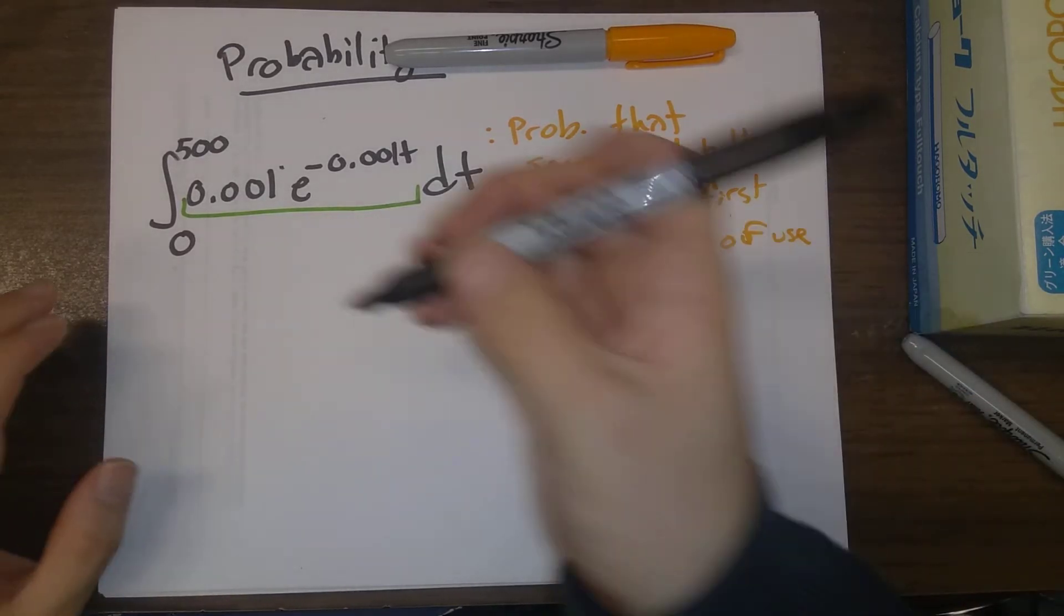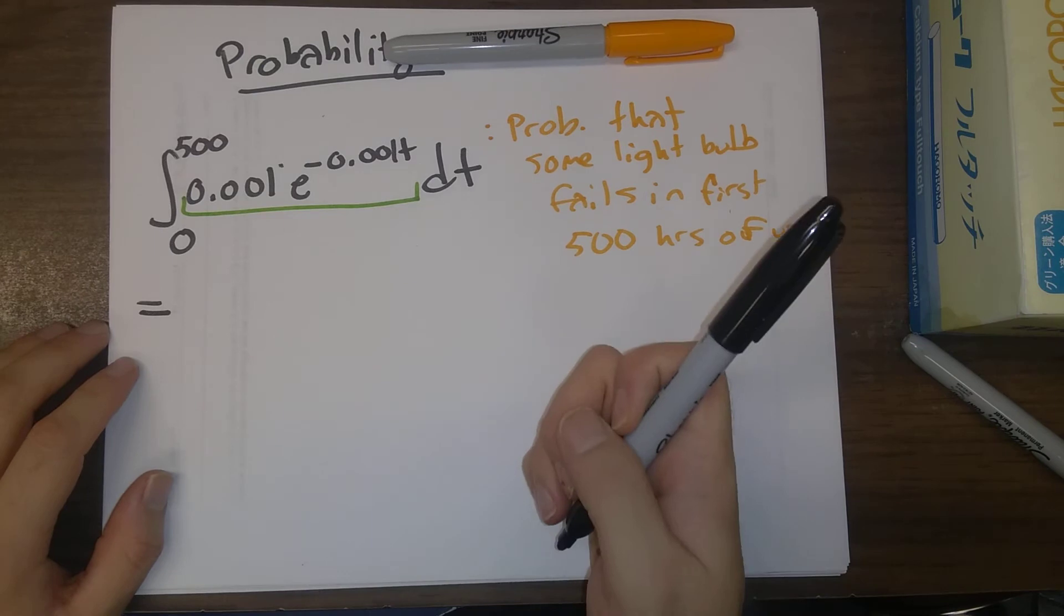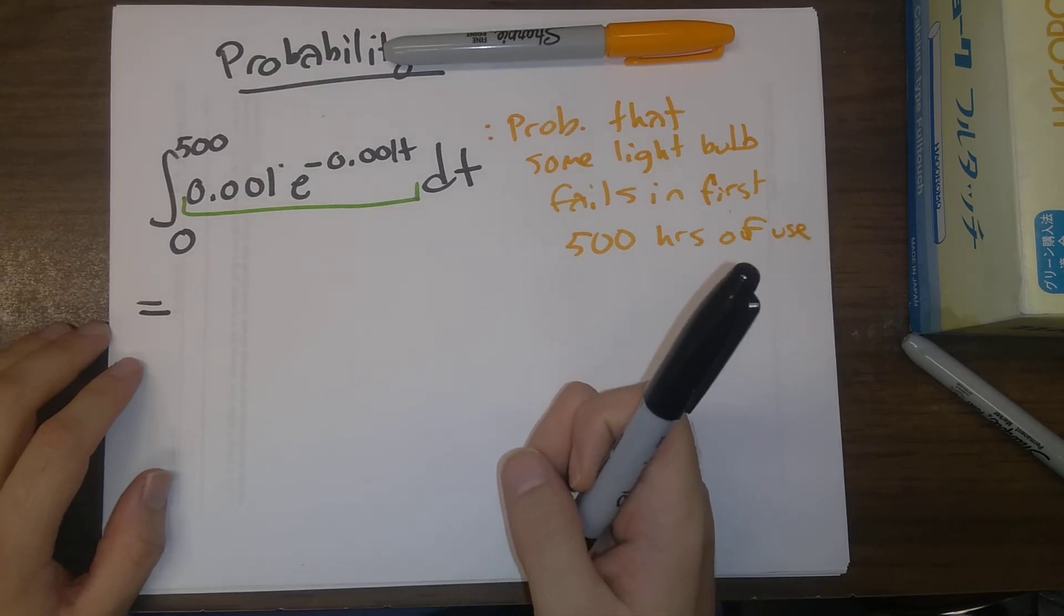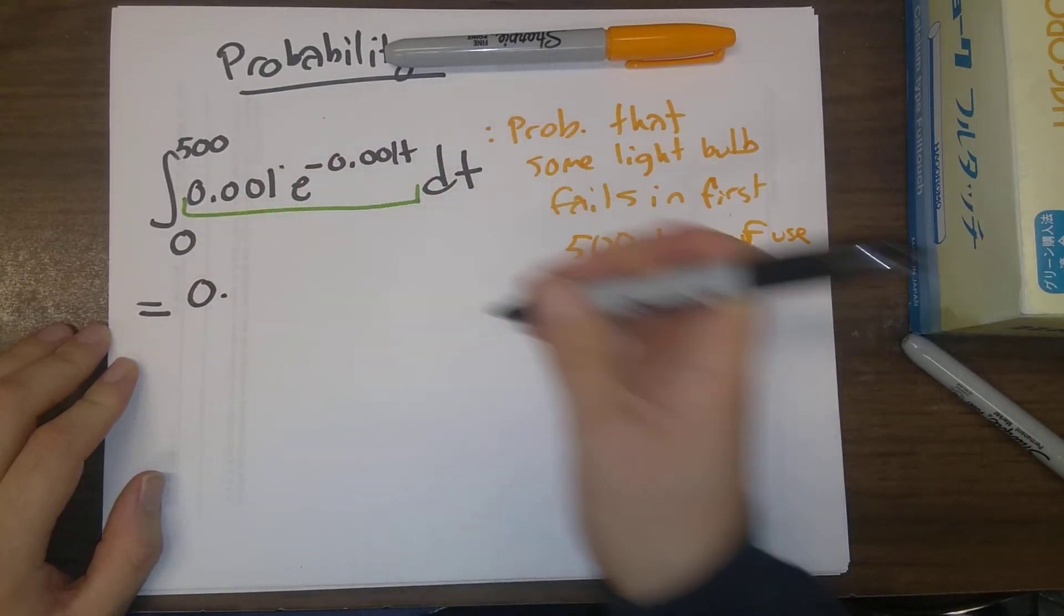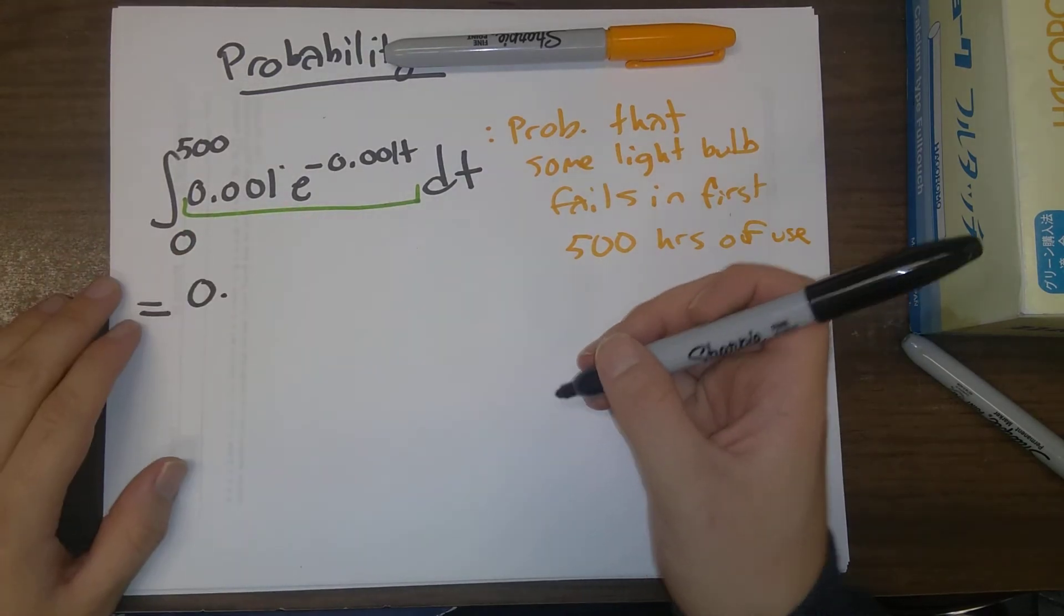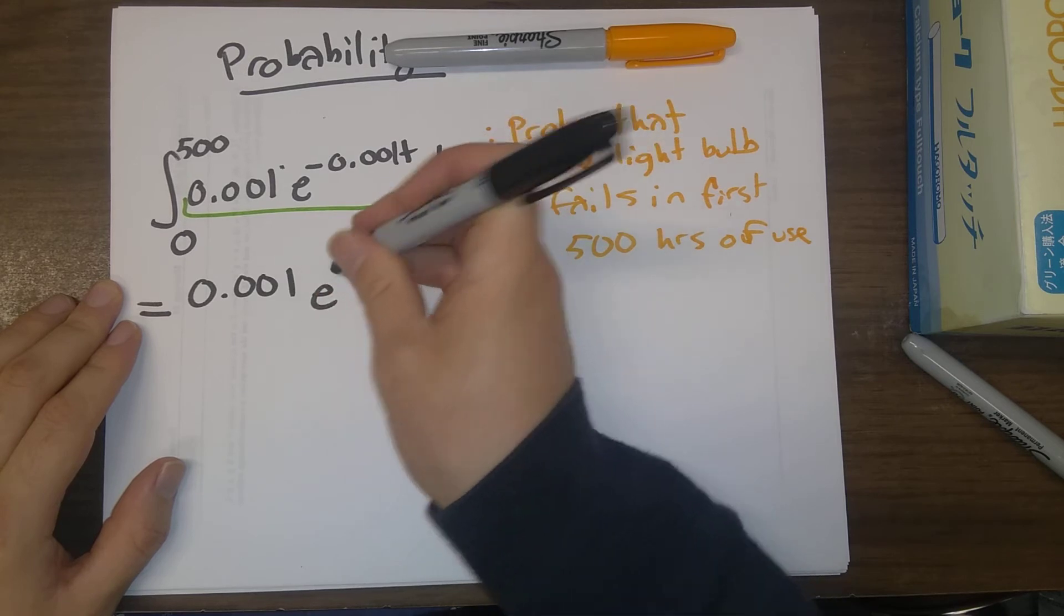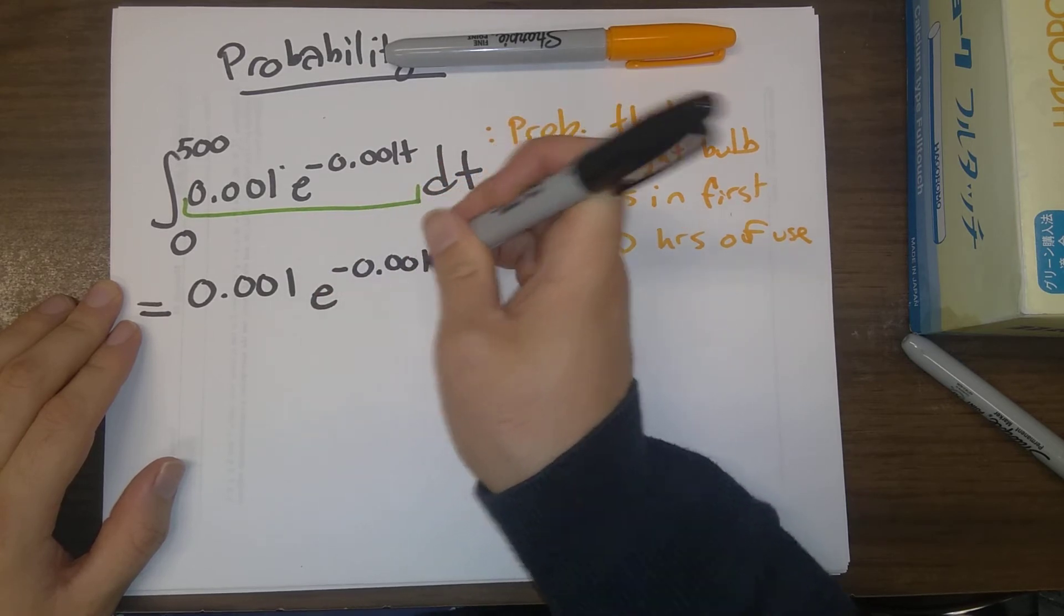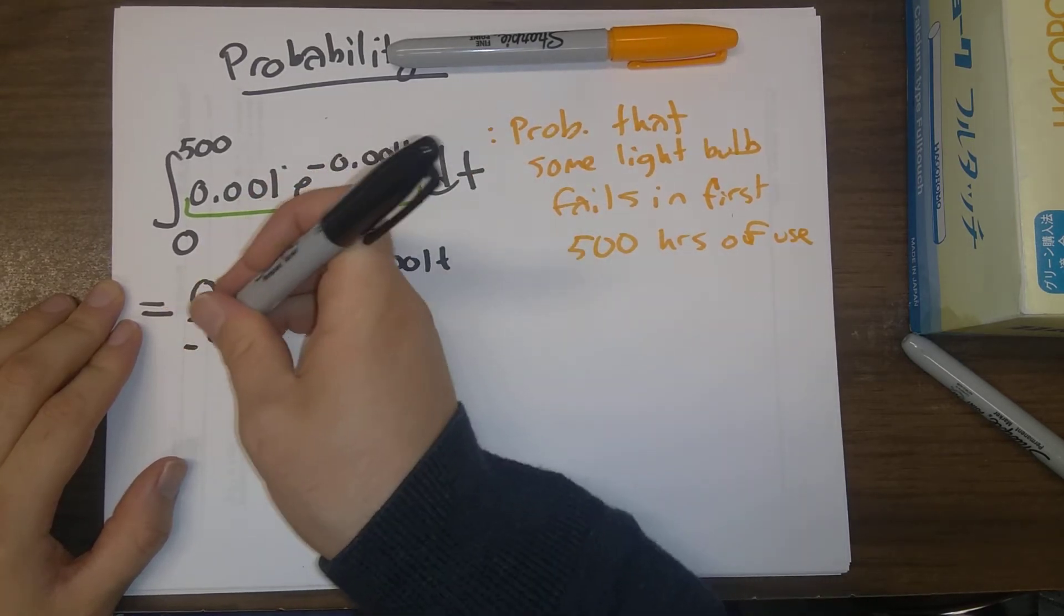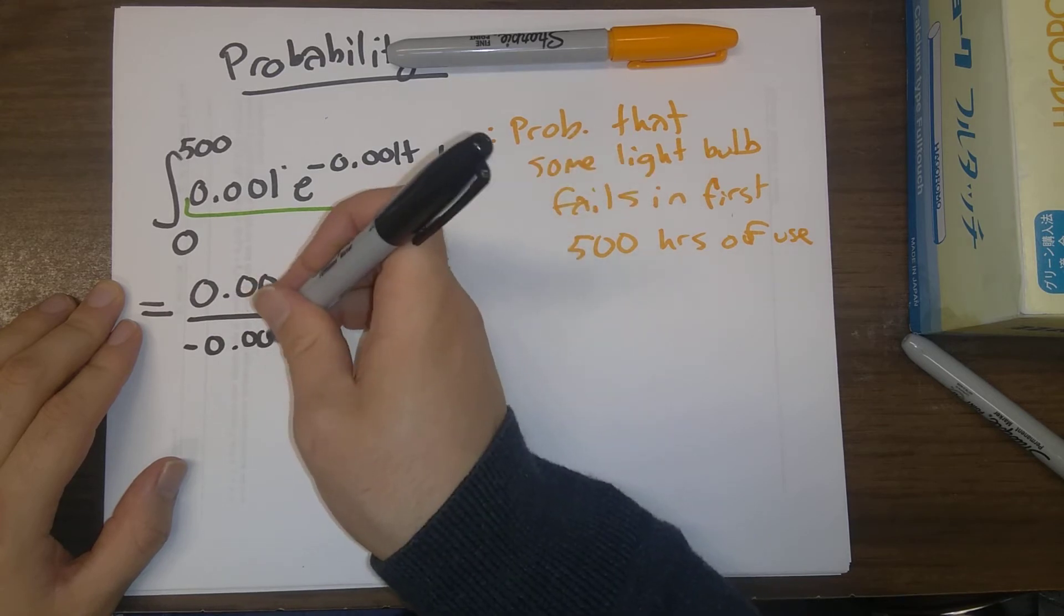So at this point, let's go ahead and evaluate this. The antiderivative of 0.001 e to the minus 0.001t would be 0.001 e to the minus 0.001t divided by negative 0.001.